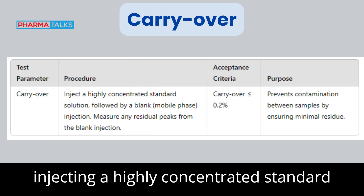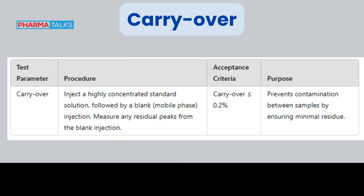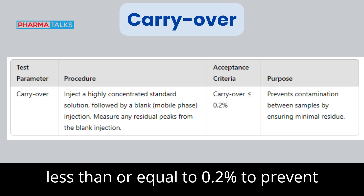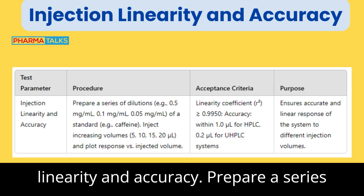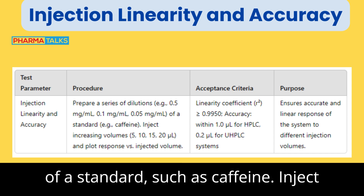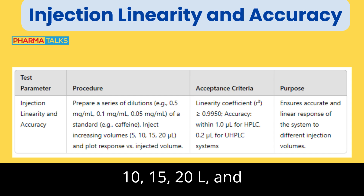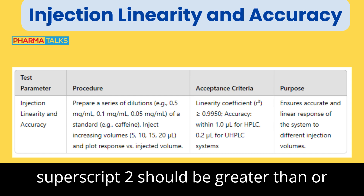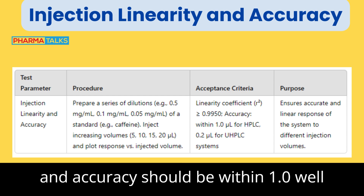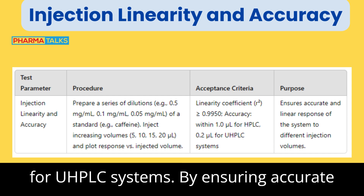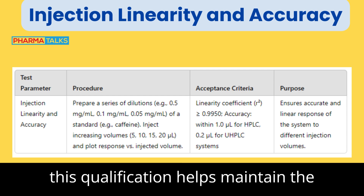Carryover: perform a carryover test by injecting a highly concentrated standard solution followed by a blank (mobile phase) injection. Measure any residual peaks from the blank run; carryover should be less than or equal to 0.2% to prevent contamination between samples. Injection Linearity and Accuracy: prepare a series of dilutions (e.g., 0.5 mg/mL, 0.1 mg/mL, 0.05 mg/mL) of a standard such as caffeine. Inject increasing volumes (e.g., 5, 10, 15, 20 µL) and plot the response against injected volume. The linearity coefficient (R²) should be ≥0.9950, and accuracy should be within 1.0 µL for HPLC and 0.2 µL for UHPLC systems. By ensuring accurate injection volume and minimal carryover, this qualification helps maintain the integrity of the analysis.